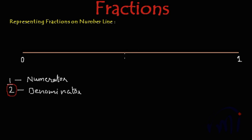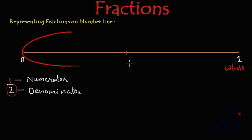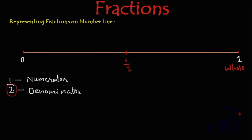So this is 0 and this will be 1, or you can call it a whole. This will be 1 by 2. So if you want to represent 1 by 2 on the number line, this will be the position. This is 1 by 2.